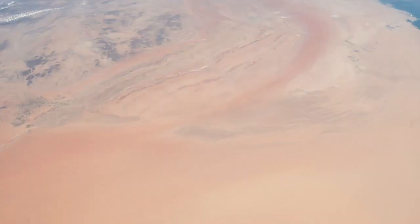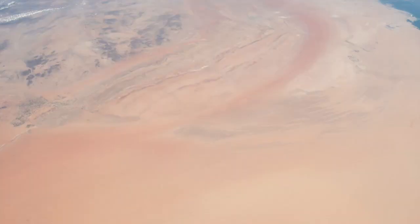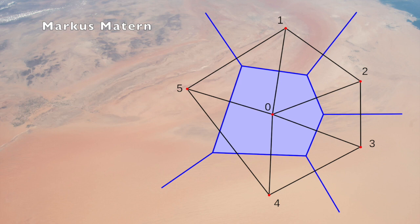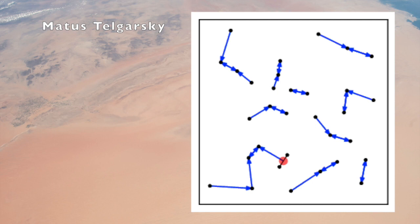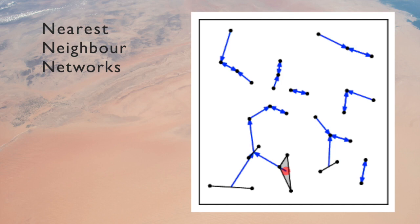The methods that archaeologists borrowed from geographers in that period included the use of Thiessen polygons, which are used to estimate the territories around a town or city, and nearest neighbor analysis, which allows us to determine whether or not the points on a map are clustered, evenly spaced out, or just randomly distributed. They can also be used to find the most efficient pathways between the points on the map.